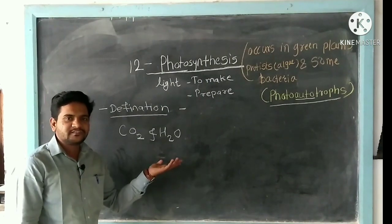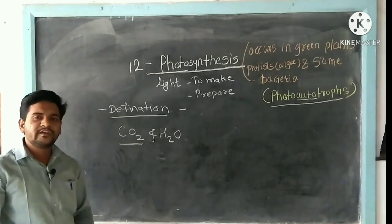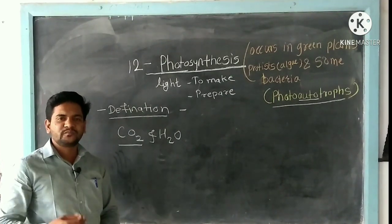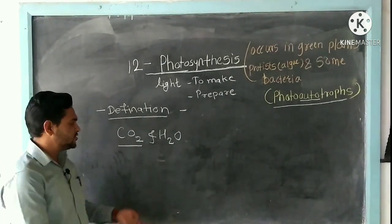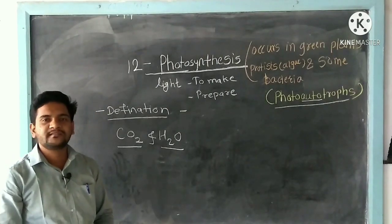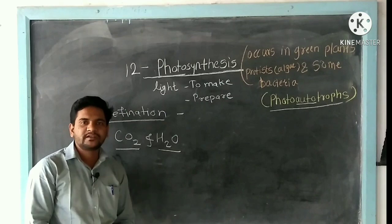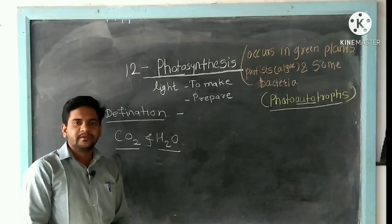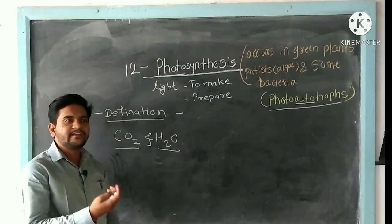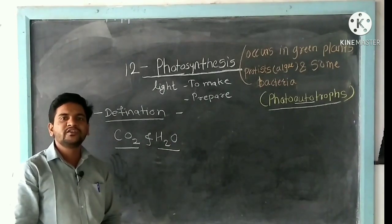CO2 enters the leaves of plants, and H2O — the water molecules — are absorbed by the plant's roots. These water molecules are then used in the photosynthesis process.